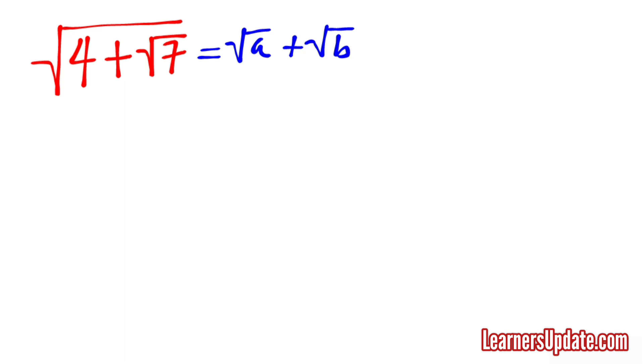The next thing I'm going to do is square both sides of this equation. By doing so, I now have 4 plus root 7 is equal to A plus 2 root AB plus B.